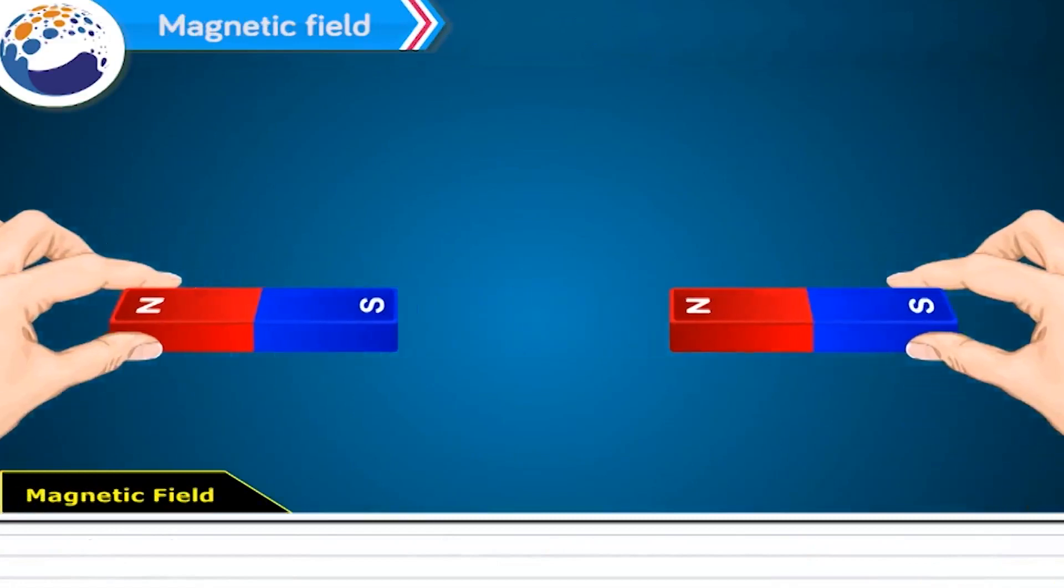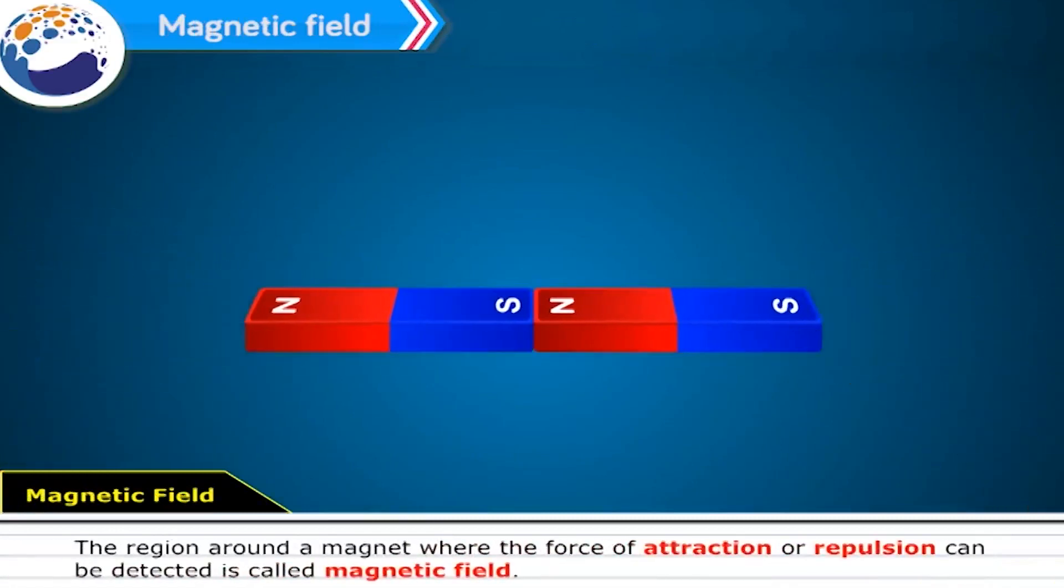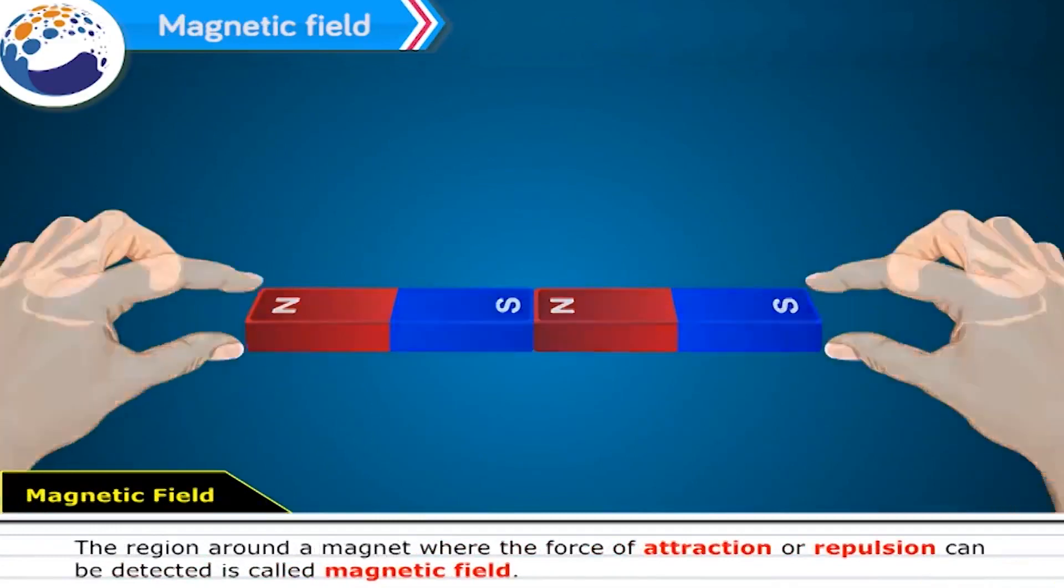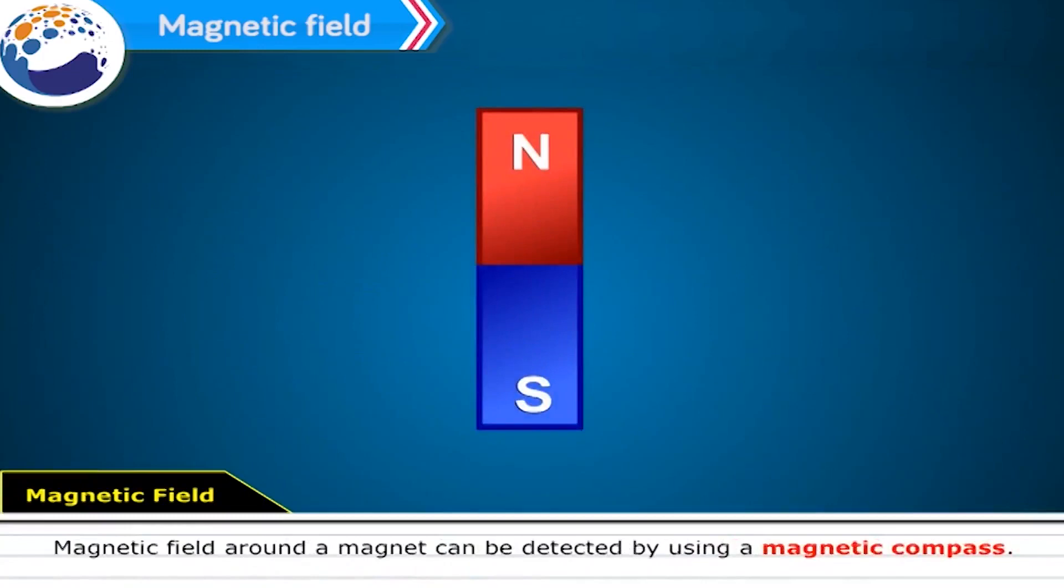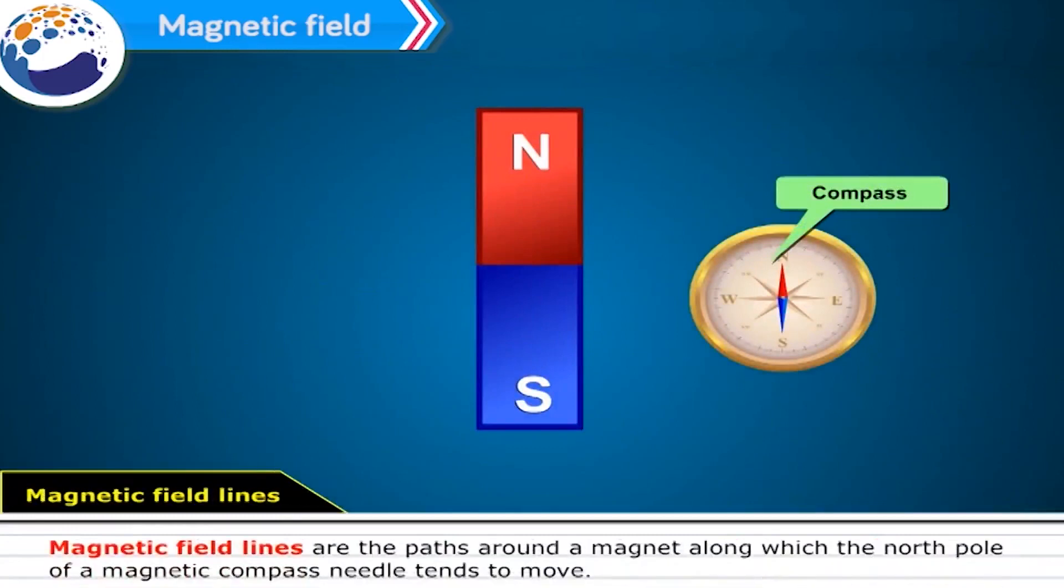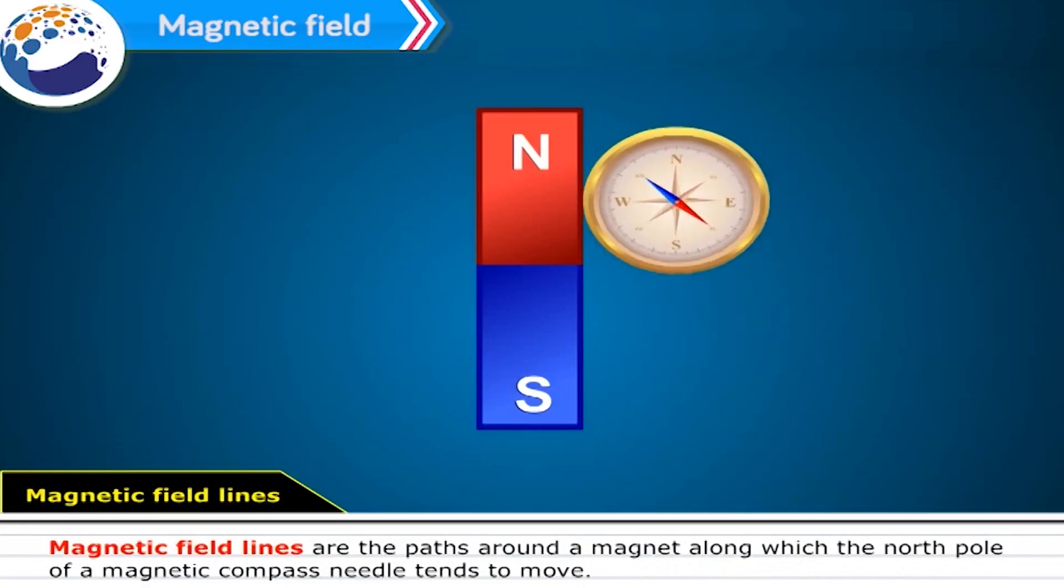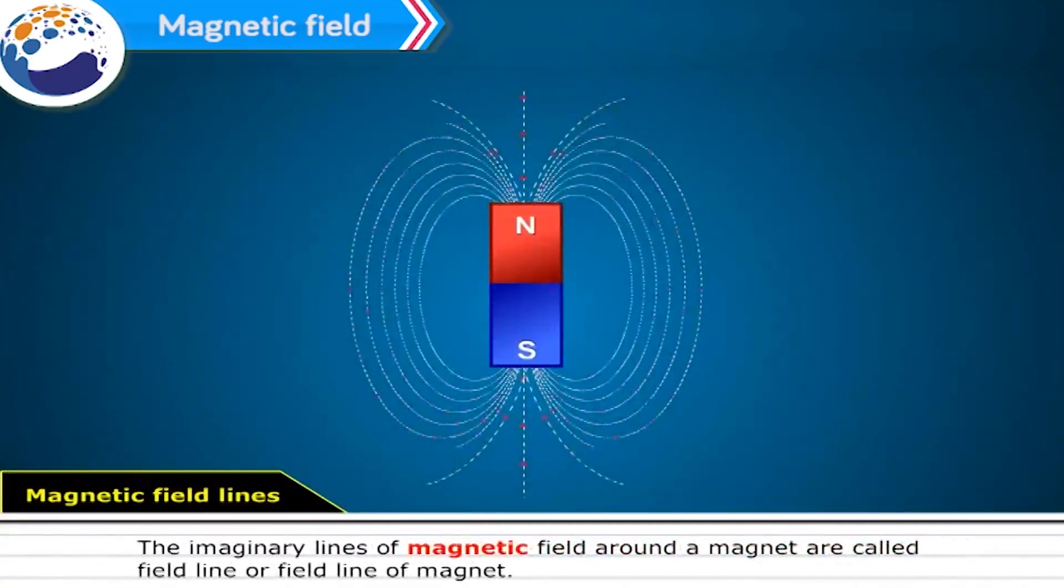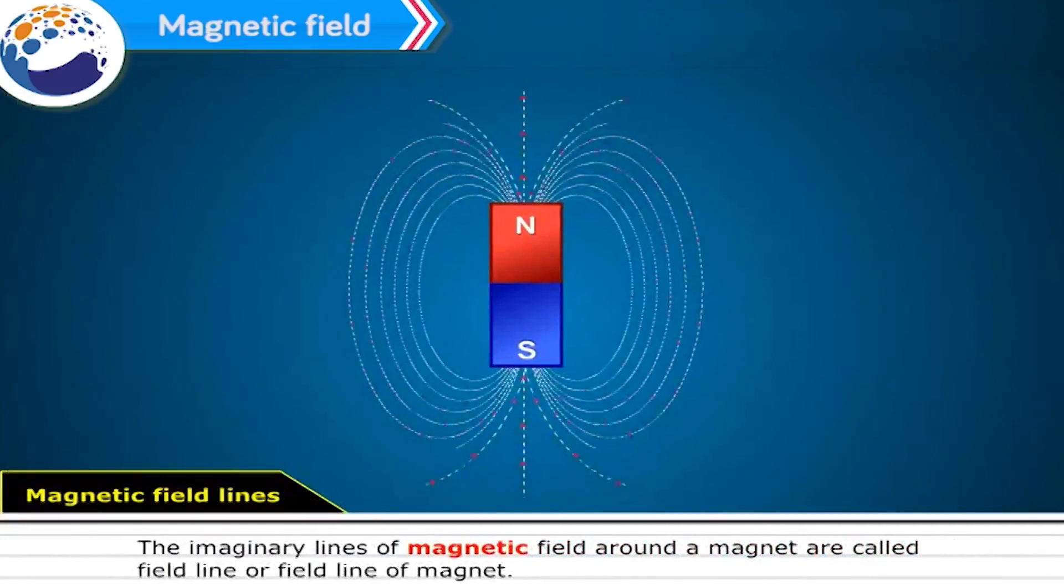Magnetic field. The region around a magnet where the force of attraction or repulsion can be detected is called magnetic field. Magnetic field around a magnet can be detected by using a magnetic compass. Magnetic field lines are the paths around a magnet along which the north pole of a magnetic compass needle tends to move. The imaginary lines of magnetic field around a magnet are called field lines or field lines of magnet.